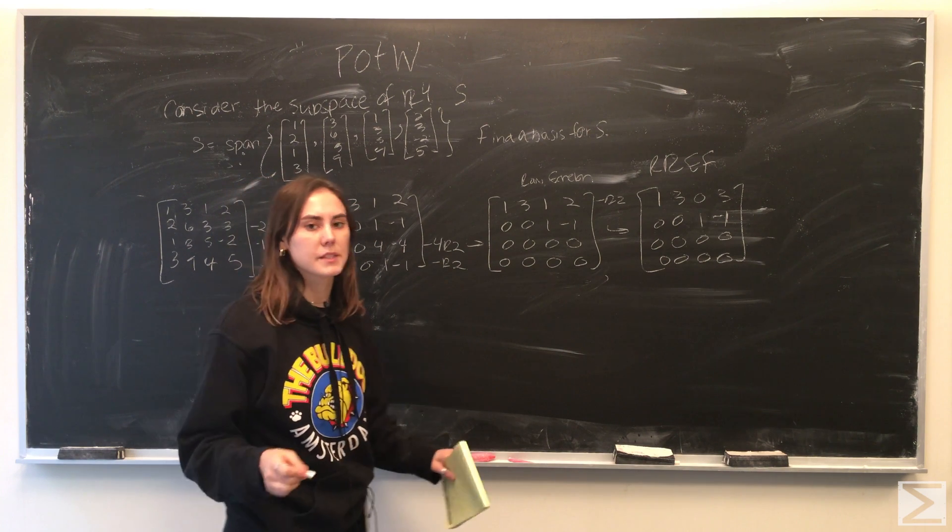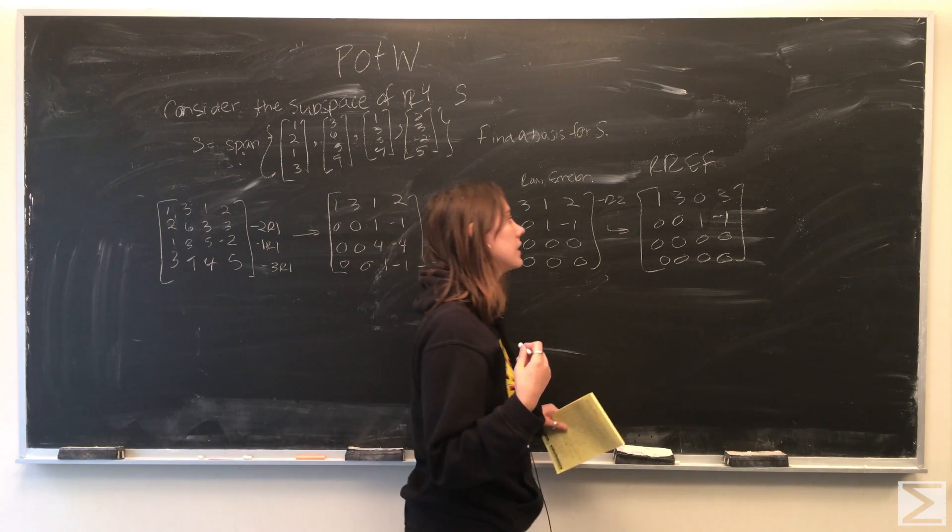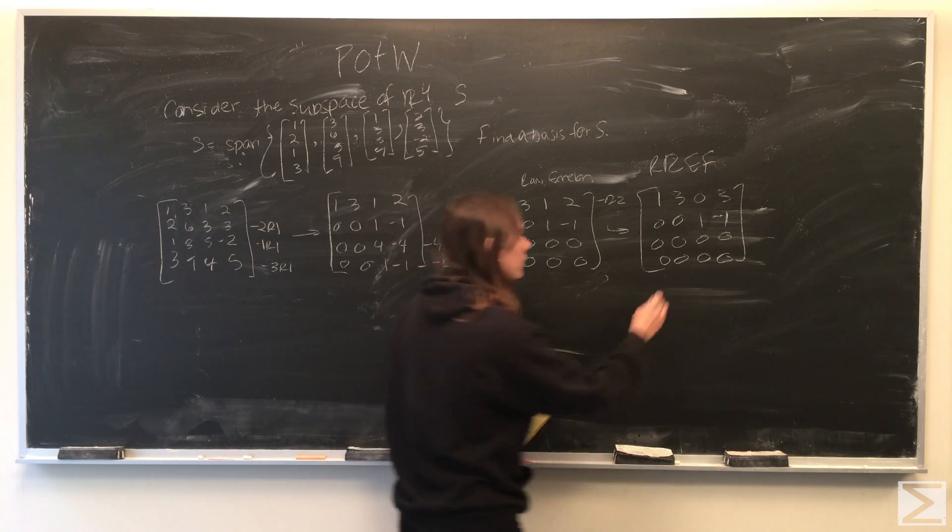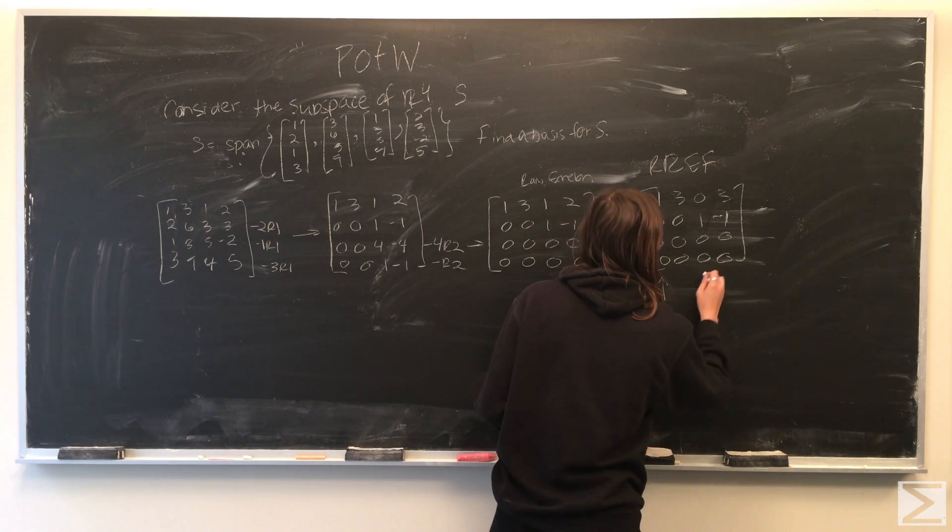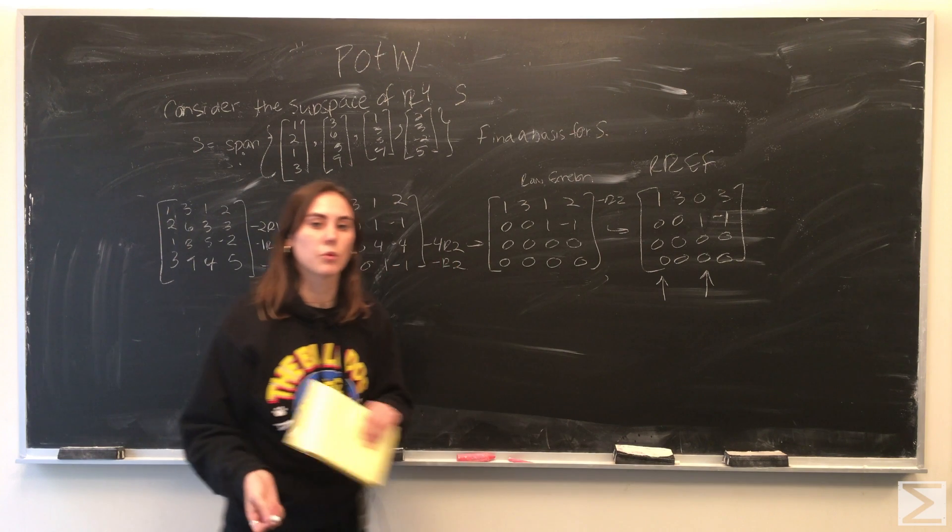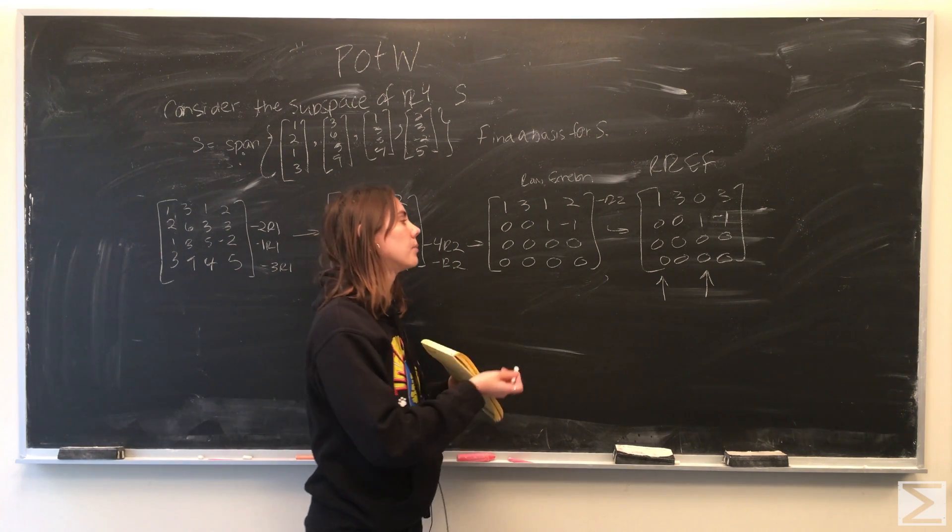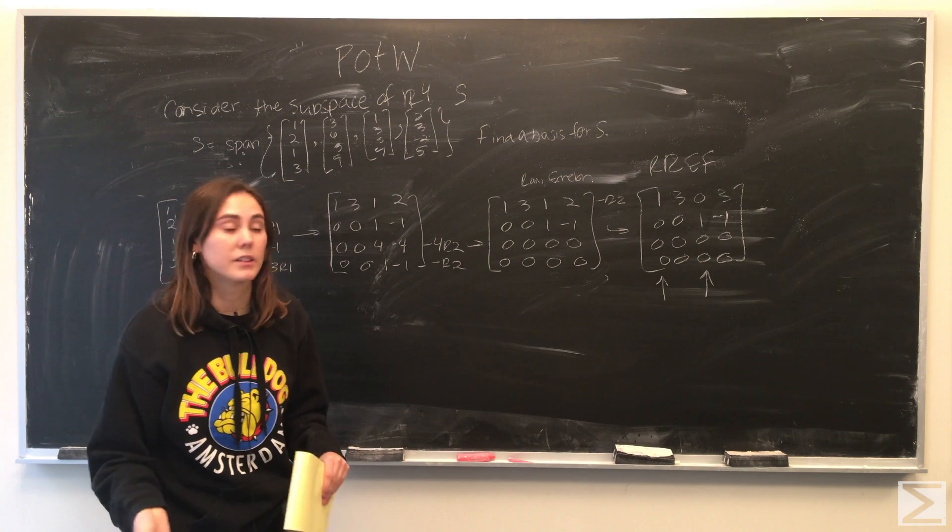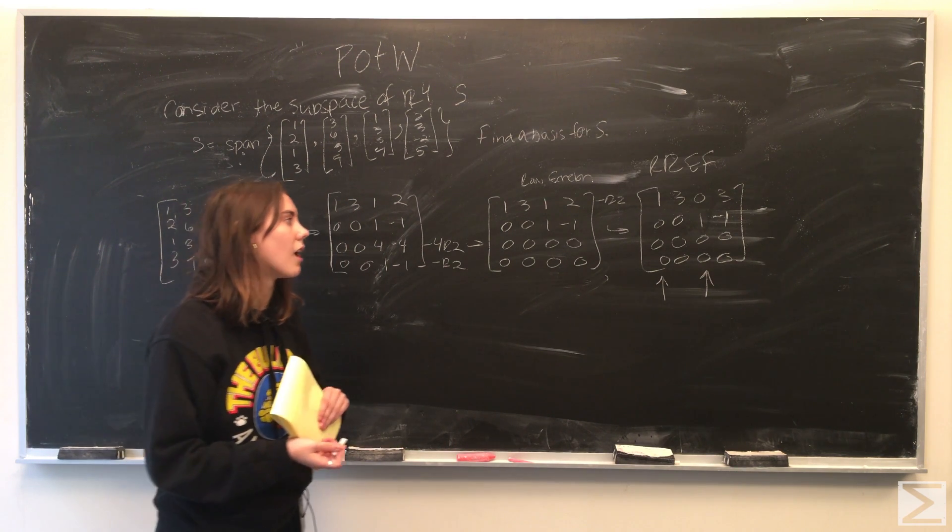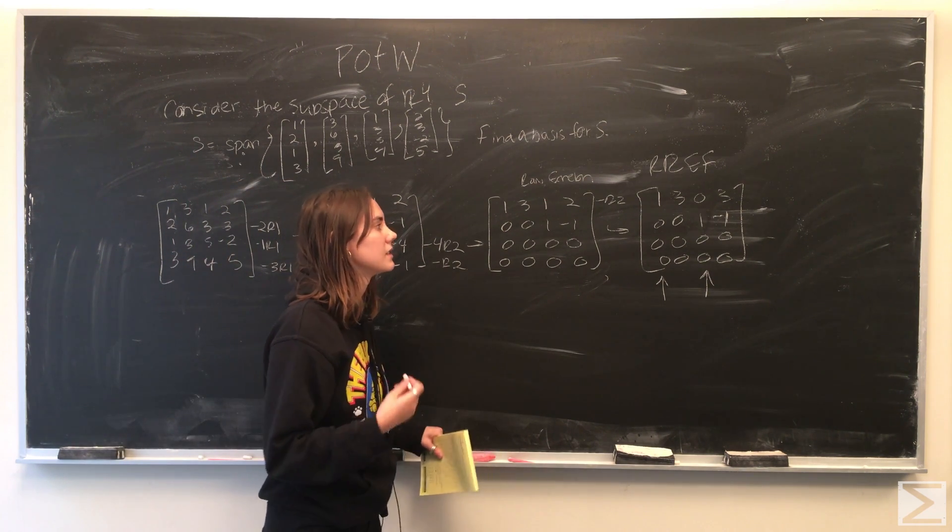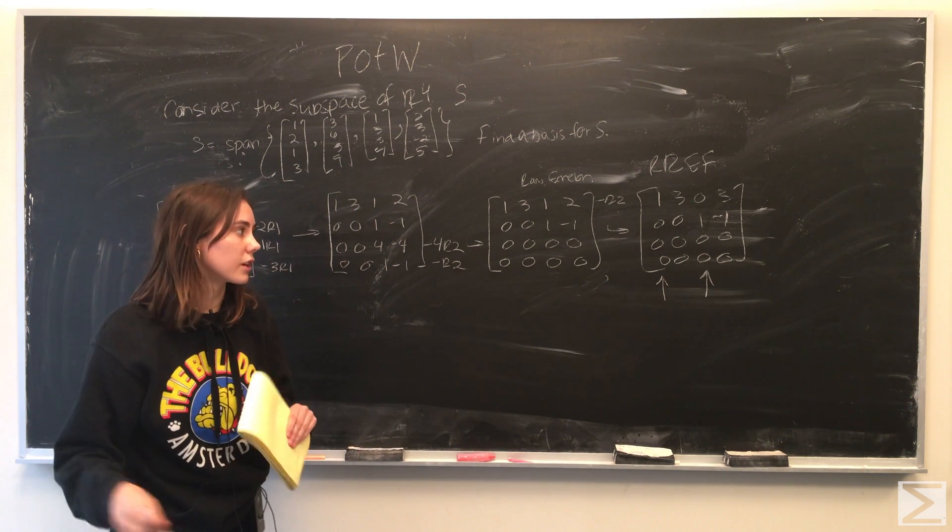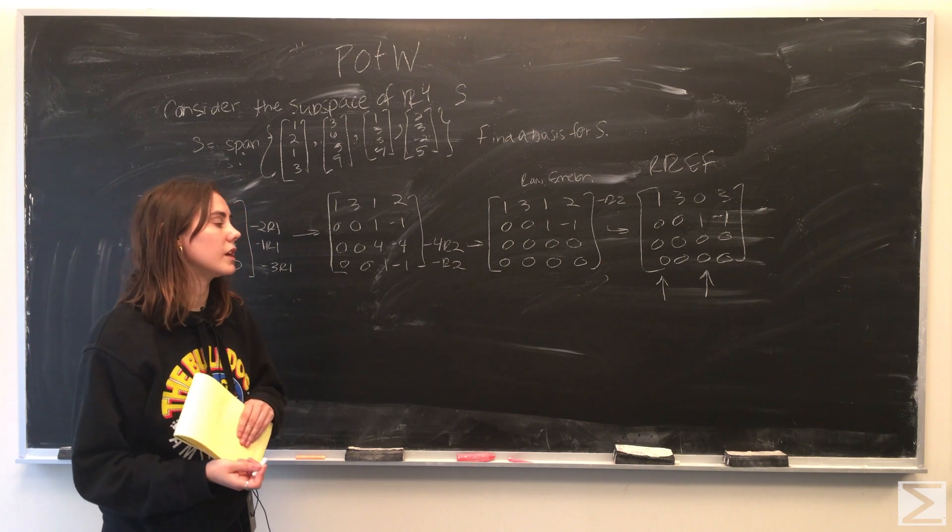To find the basis, what we're going to look at is the columns that have the leading ones in them. So obviously this first column and this third column both have leading ones, and what we can tell is that column one and column three therefore have to be linearly independent of each other. And what we can say is that column two and column four actually are linearly dependent on column one and column three.